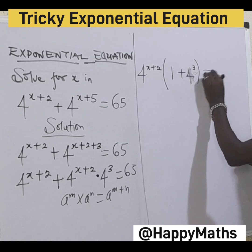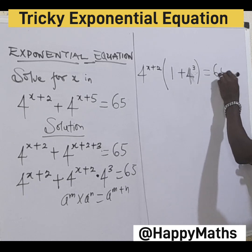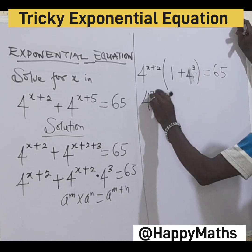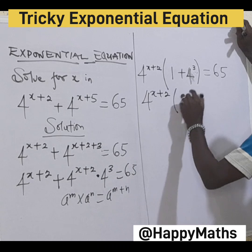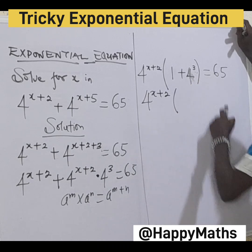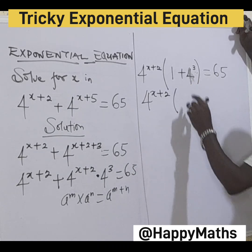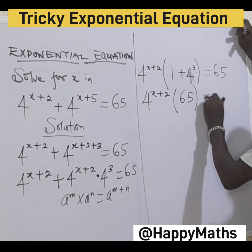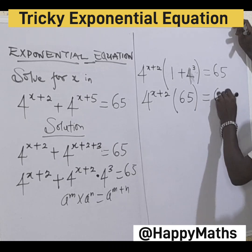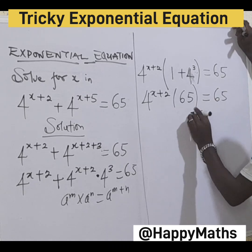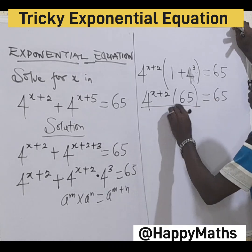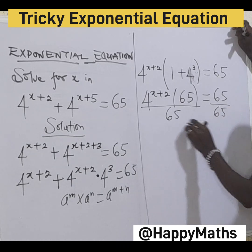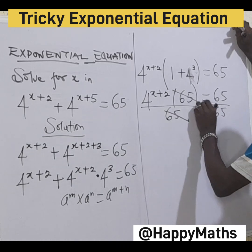4s plus 3 now equals 65. Now 4s plus 3 is 4 times 4 which is 64, plus 1 gives us 4s plus 1, so we get 65 equal to 65. Now let's divide both sides by 65: 65 divided by 65.